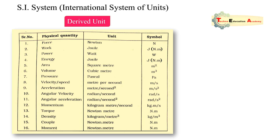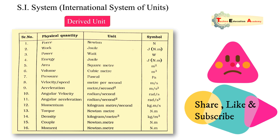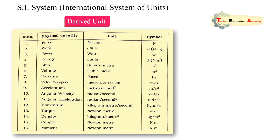Pressure is the force applied perpendicular to the surface of an object per unit area over which that force is distributed. Its unit is pascal, and one pascal equals one newton per meter square. There are various types of pressure: gauge pressure, vacuum pressure (pressure below atmospheric pressure), and absolute pressure — discussed in the thermodynamics playlist.